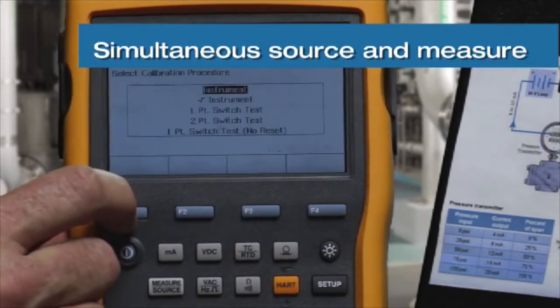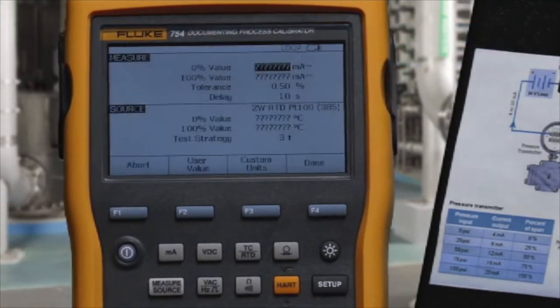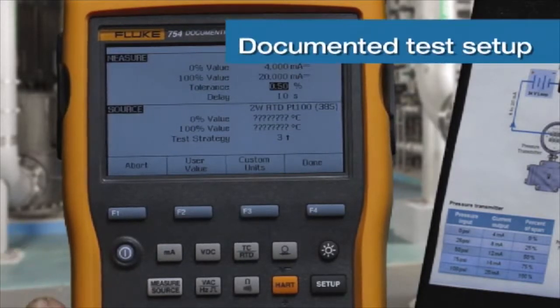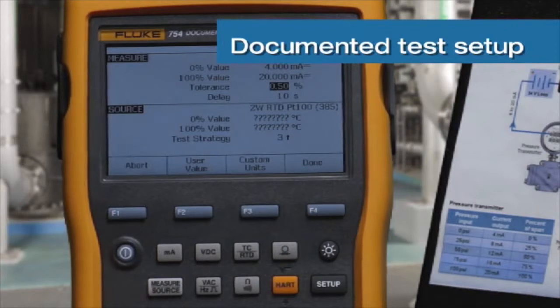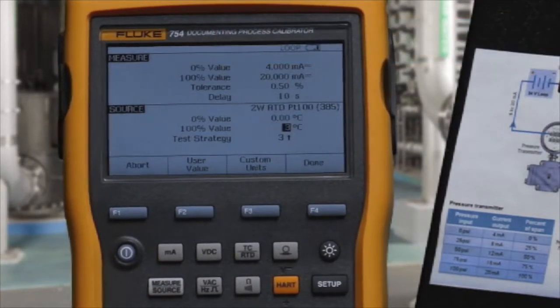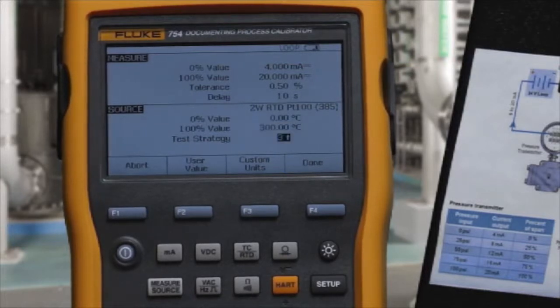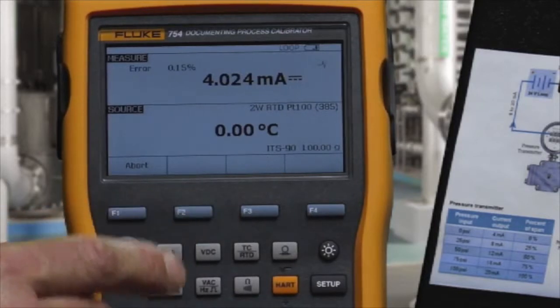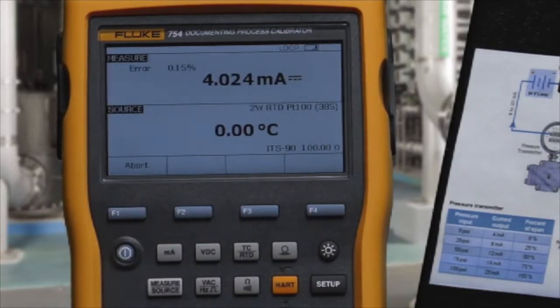We document the calibration as found for an instrument. We're going to measure 4 to 20 milliamps to a test tolerance of 0.5% while sourcing 0 to 300 degrees C. We're going to test three points. Select auto test, and the performance of the transmitter will be recorded.